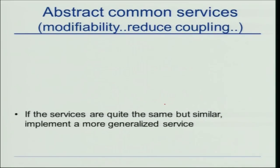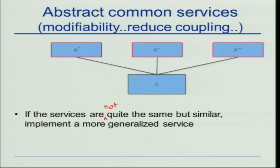Abstract common services is another simple tactic. If the services are not quite the same but are similar, implement a more generalized service. For example, if one function deals with integers, another with strings, and another with real numbers, you can abstract them and implement a function that resolves them through a polymorphic operation.